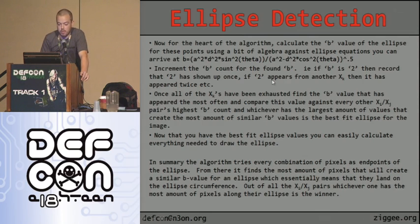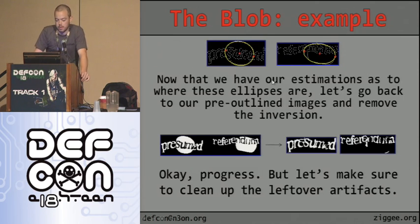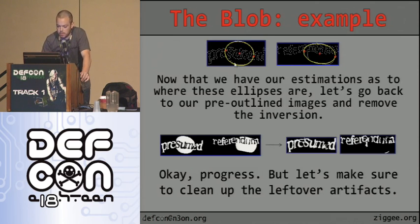Now that you have the best fit ellipse values, you can easily calculate everything needed to draw the ellipse. In summary, the algorithm tries every combination of pixels as endpoints of the ellipse, then finds the most pixels that create a similar b value, meaning they land on the ellipse circumference. Out of all xi-xj pairs, whichever has the most pixels along its ellipse is the winner.